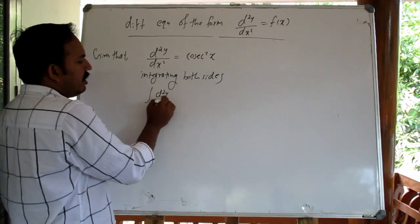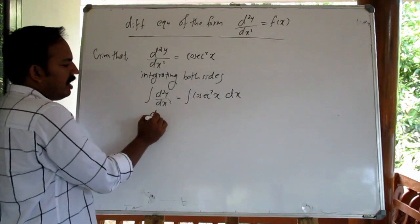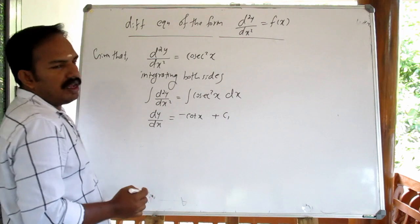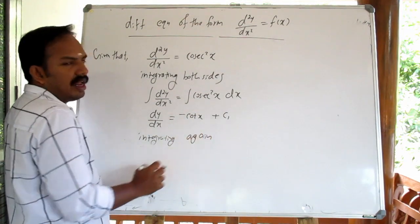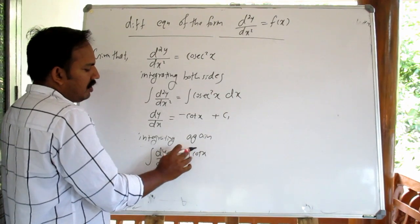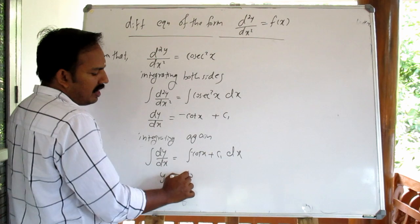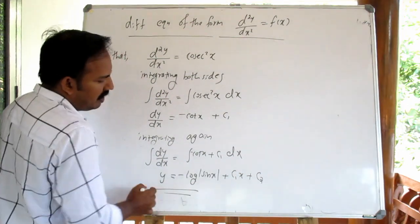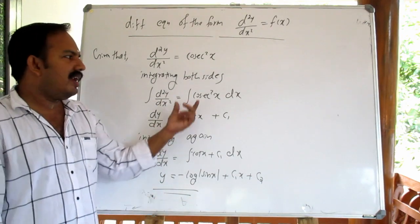Integral of d squared y by dx squared equal to integral of cosec squared x dx. The integral of cosec squared x gives minus cot x. Integrating again: dy by dx equals minus cot x plus c1. Therefore y equals minus the integral of cot x plus c1 dx.